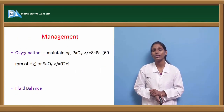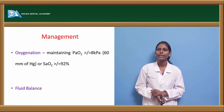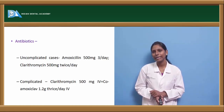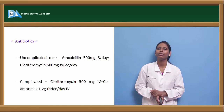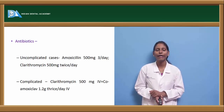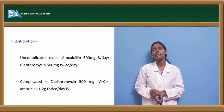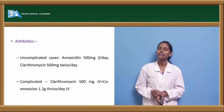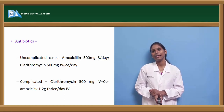Coming to the management of patients with pneumonia, maintenance of partial oxygen up to 8 kPa and fluid-electrolyte balance is important. Antibiotics used in uncomplicated cases include amoxicillin 500 mg three times daily for 3 days, and clarithromycin 500 mg twice daily. In complicated cases, clarithromycin 500 mg IV and co-amoxiclav 1.2 g three times daily can be given.